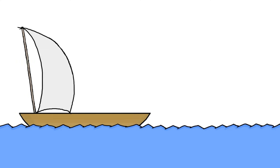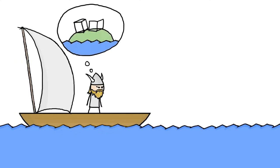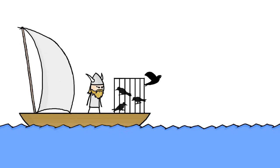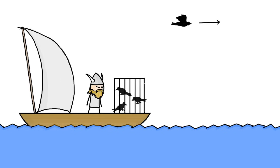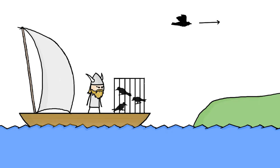Floki Vilgardarsson, a great Viking explorer credited with the discovery of Iceland, carried aboard a cage of ravens. When he thought land should be near, he would release one of the birds. If it circled the boat without purpose, land was not near. But if it took off in a certain direction, the boat followed, knowing the bird was headed toward land.